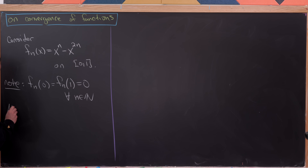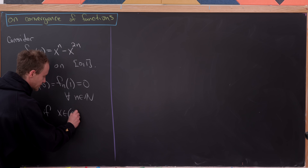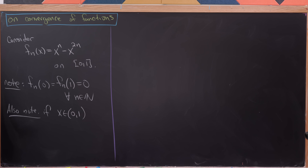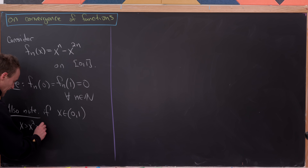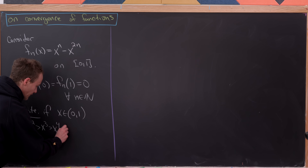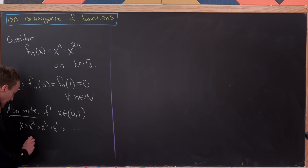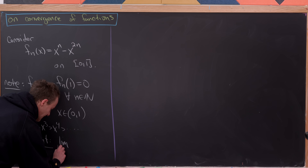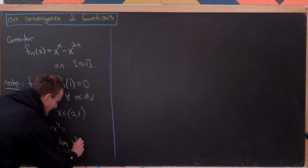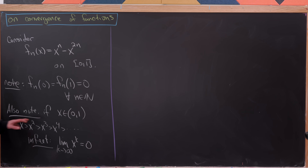If we have some x value between 0 and 1, we have this inequality of powers of x: x is bigger than x squared, is bigger than x cubed, is bigger than x to the 4th, and so on. In fact, the limit as k goes to infinity of x to the k equals 0, for x between 0 and 1.